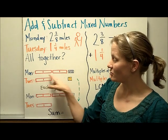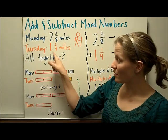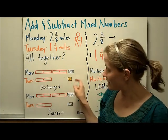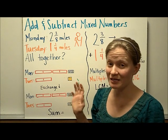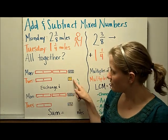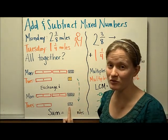First, we will model Monday by showing two wholes and 3/8, and then Tuesday was one whole and 1/4. In order to be able to add the fraction pieces, you know that you have to make an exchange so that they're all the same color or denominator. So you're going to exchange 1/4 into blue pieces, which would become 2/8.